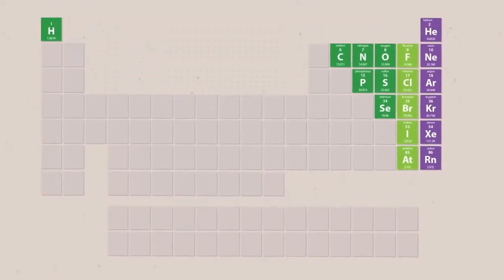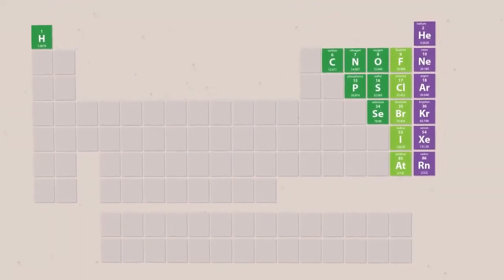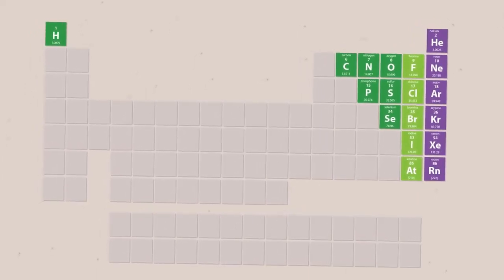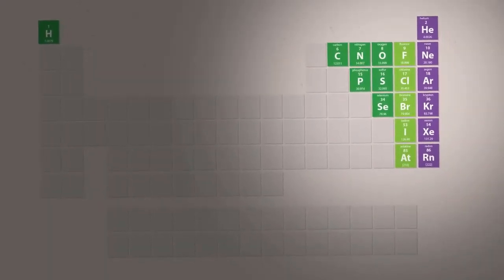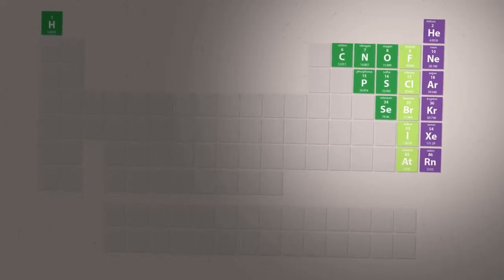Non-metals are found on the right hand side and upper part of the periodic table. Some common non-metals are carbon, nitrogen, oxygen and the halides.